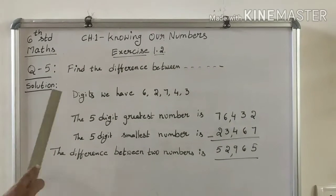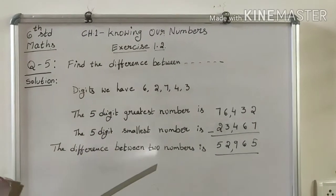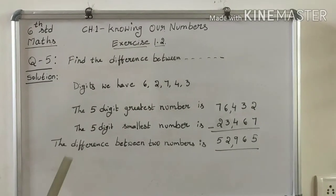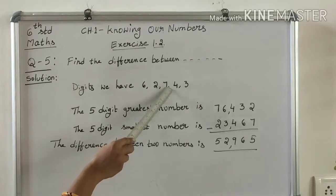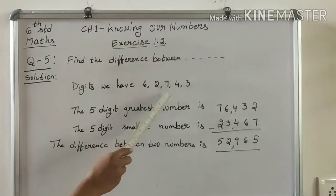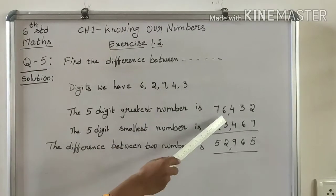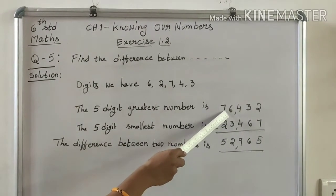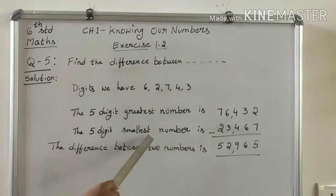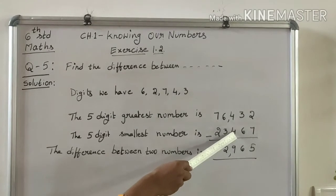Here we have the greatest number of 5 digits and the smallest number of 5 digits. We know how to make the greatest and smallest number using 5 digits. This is the greatest number of 5 digits. Next, what is the smallest number of 5 digits? We have the 5-digit number.